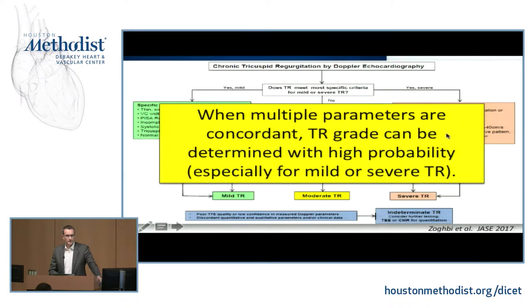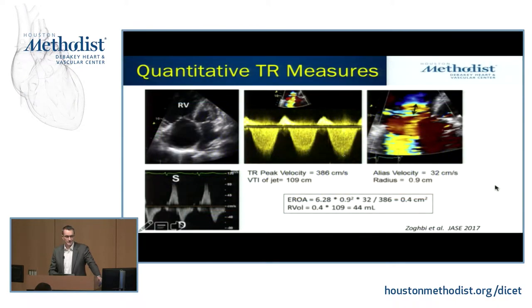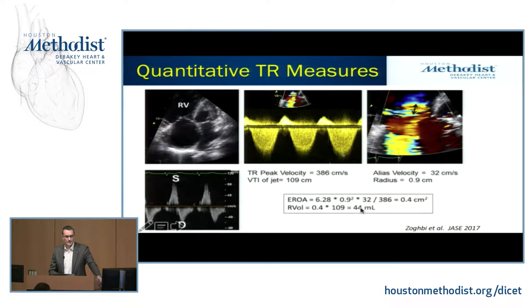Here's an example case: RV dilation is present, there's a CW signal, a measurement of flow convergence radius which you plug into the EOA formula, and hepatic vein flow showing systolic flow reversal. This example shows a huge EOA and a fairly large regurgitant volume.